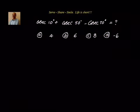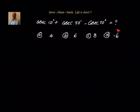Hello friends, welcome back, hearty welcome to you. Let us look at this problem. We have to find out what is the value of cosecant of 10 plus cosecant of 50 minus cosecant of 70. What is the value? Is it equal to 4, 6, 8, or minus 6? We have been given a couple of options. This is a little bit advanced level example.